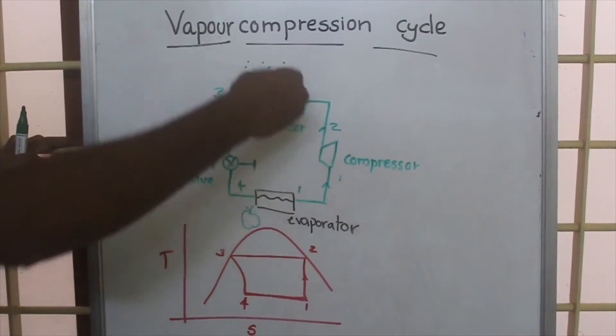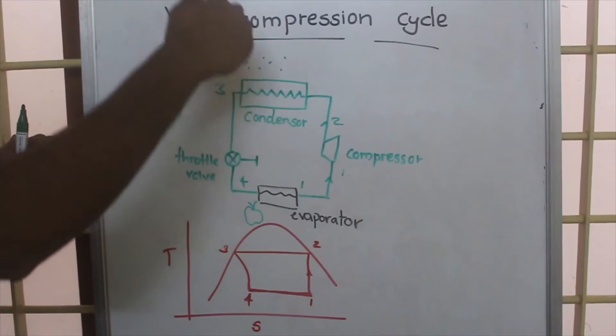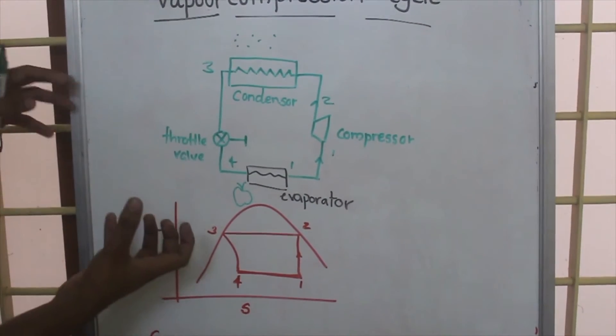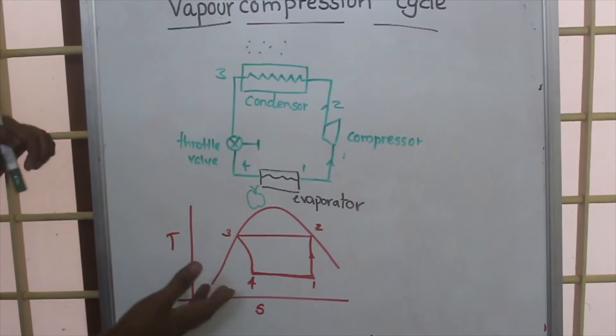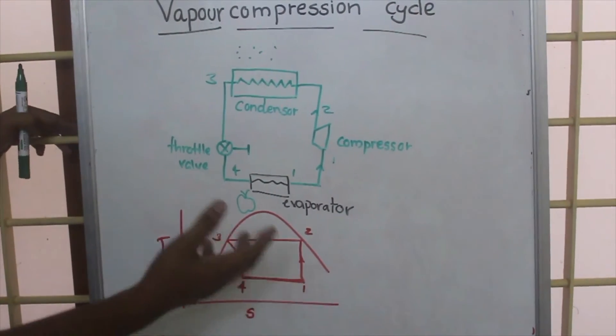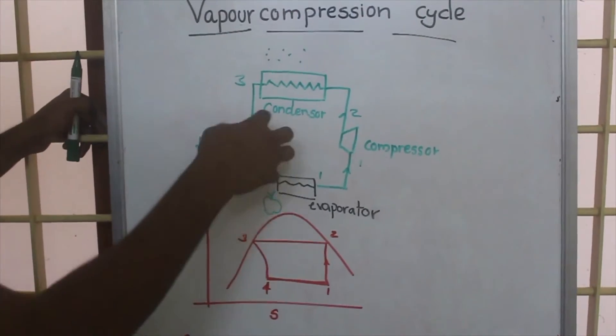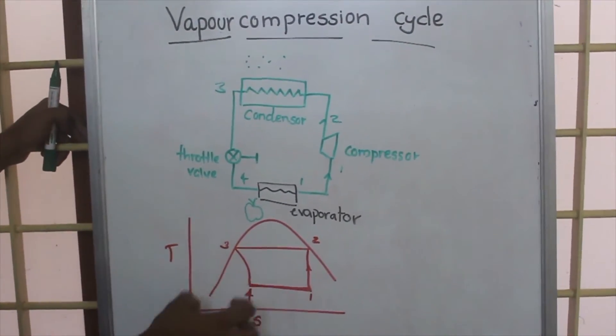From saturated liquid state, this goes through the throttle valve. In the throttle valve, this working fluid undergoes an expansion such that we get a mixture of vapor and liquid phase. So it reaches point 4.